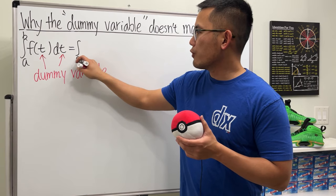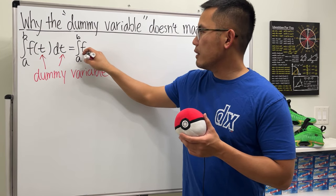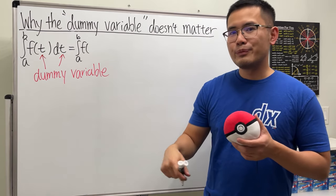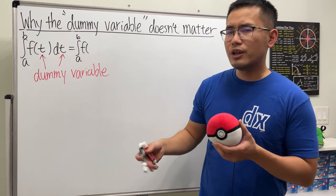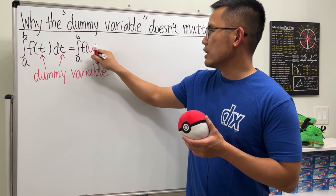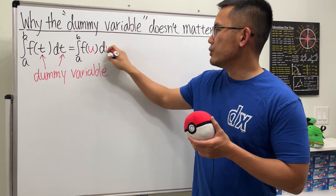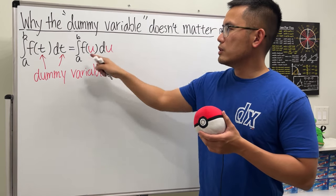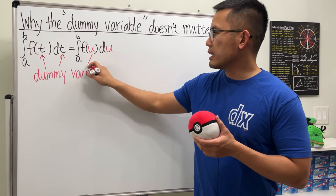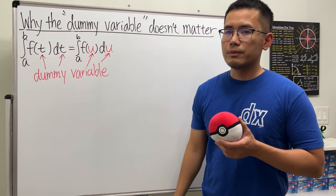This is the same as if we write the integral going from a to b of f of u du — using u substitution notation. In that case, u is the dummy variable for this definite integral.